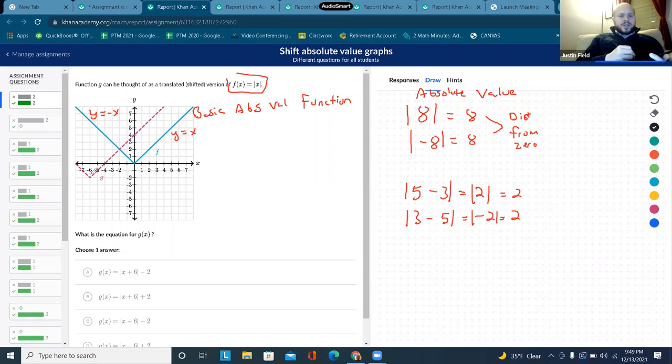You can see the pink one is the same graph. If we extended it out, it would look exactly the same. It's just moved. So if we look at the pointy part, it's called the vertex. So where is that vertex moved? It's moved down 2 and left 6. Let's write down 2, left 6.